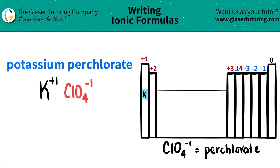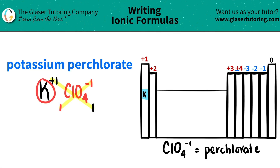Now, since we have both components and we have both charges, we do this little trick where we crisscross the charges to see how many of each thing we need. In this case, this plus one crisscrosses down telling me that I need one perchlorate. And then this negative one crisscrosses down telling me that I need one of the potassium.